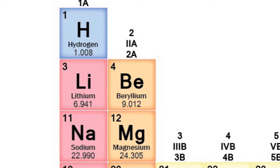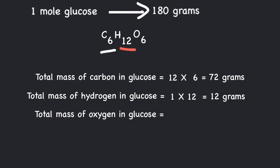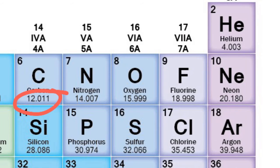Lastly, we have oxygen. The atomic mass of oxygen is 16, and there are 6 oxygen atoms in glucose, so we multiply 16 by 6 to get 96 grams of oxygen.